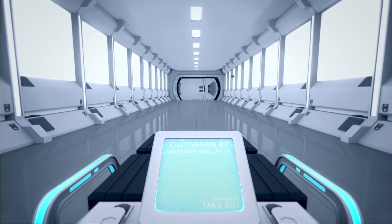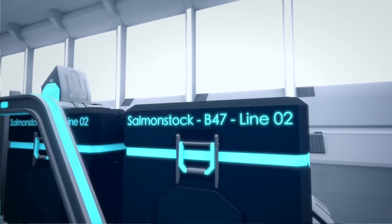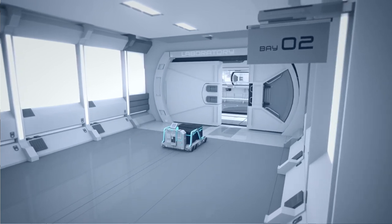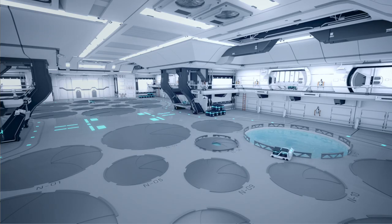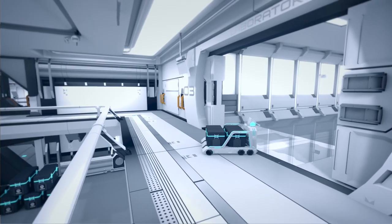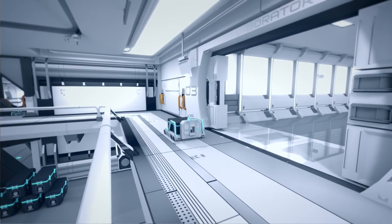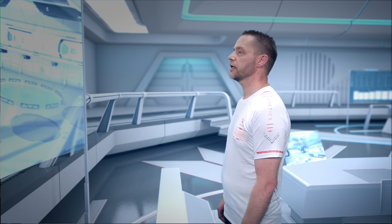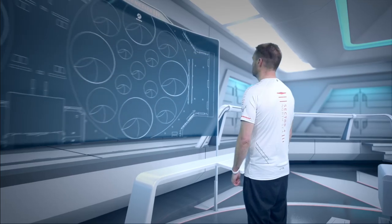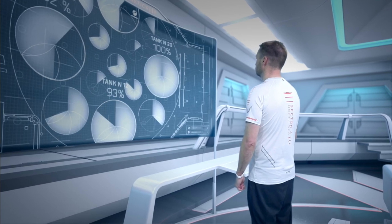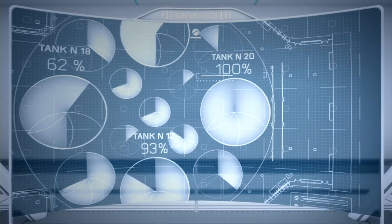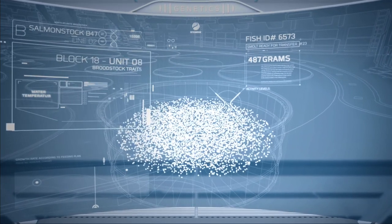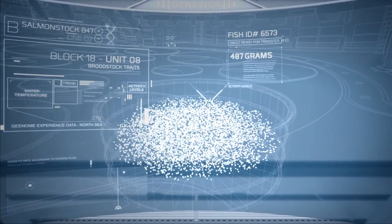Transporting salmon stock B47 Line 02 for immersion in Tank N1. Please show me the growth rate prognosis for the tanks in this hatchery. Smolt in Tank N20 has reached its 100% growth goal. It's tagged and ready for shipment. It is designated for Block 18, Unit 8.